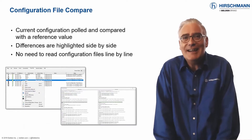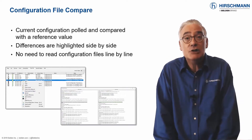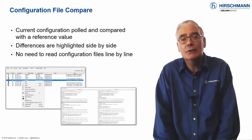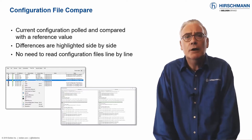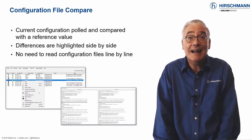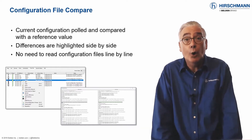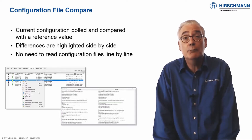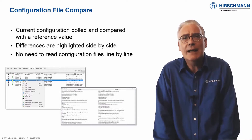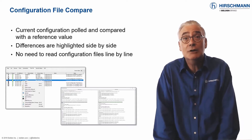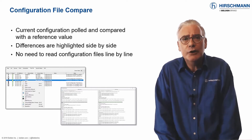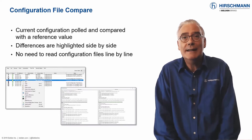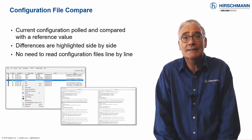Industrial HiVision includes some great tools to warn you when the configuration of a network device has changed. But that still leaves you with the challenge of working out exactly what has changed. Of course you could spend hours comparing the previous and current configuration files manually, or you could use the configuration file compare tool. This gives you a side-by-side comparison of a device's previous and current configuration. Changes are color coded, making them simple to detect. Use this tool to save time and frustration when dealing with unauthorized changes to device configurations.